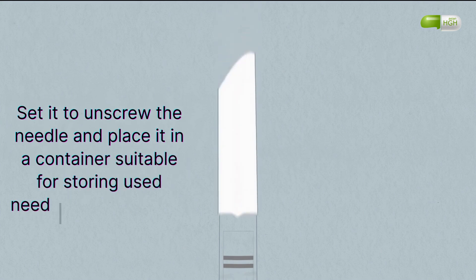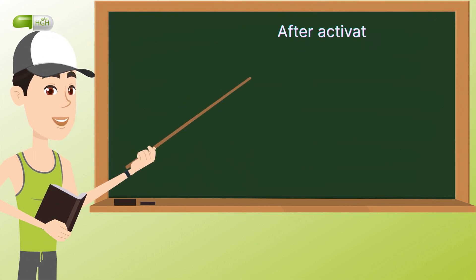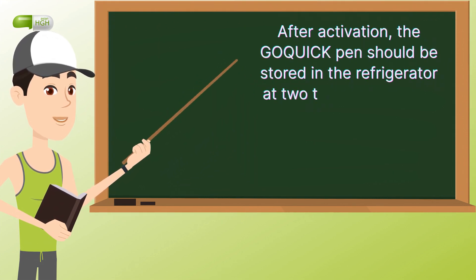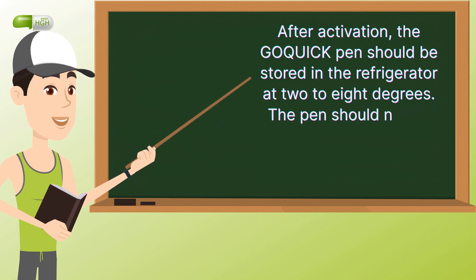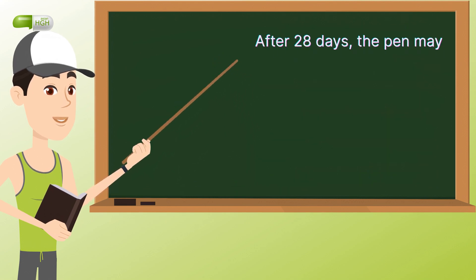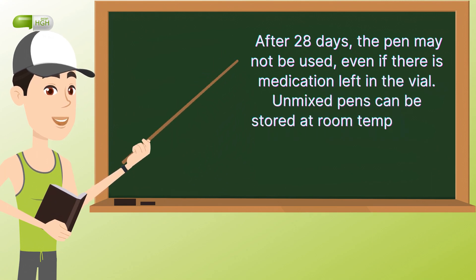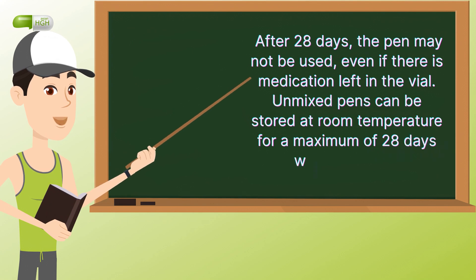Put the white cap back on. After activation, the GoQuick pen should be stored in the refrigerator at 2 to 8 degrees. The pen should not be frozen. The GoQuick pen can be used for a maximum of 28 days. After 28 days, the pen may not be used, even if there is medication left in the vial. Unmixed pens can be stored at room temperature for a maximum of 28 days when traveling.